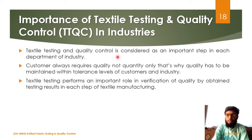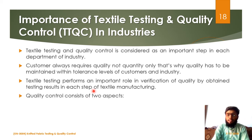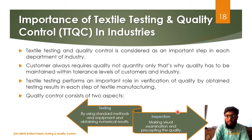Importance of textile testing and quality control in industries: textile testing and quality control is considered an important step in each department of the industry because customers always require quality rather than quantity of products, so it is compulsory to maintain the quality of products to achieve customer satisfaction. Textile testing performs an integral role because it verifies the quality of products by providing testing results. There are two aspects of quality control: textile testing and inspection. In testing, standard methods and equipment are used to obtain numerical value results that justify product quality, while in inspection, a visual examination is made to perceive the quality of products.